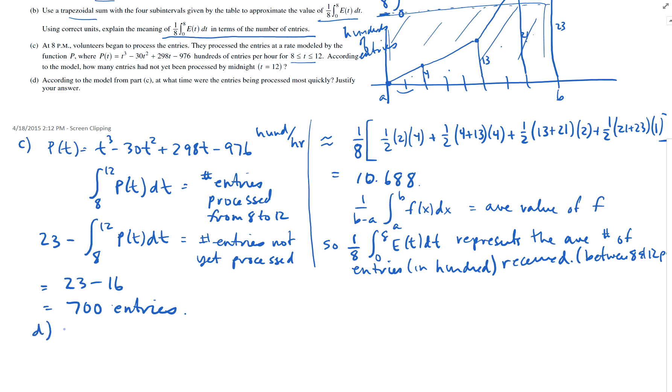D says, according to the model from part C, at what time were the entries being processed most quickly? Well, P is the function that tells me the rate at which they were being processed. Well, I want to find where is that a maximum? So, I want to find the maximum P. Well, I want to find P prime of T and set that equal to zero.